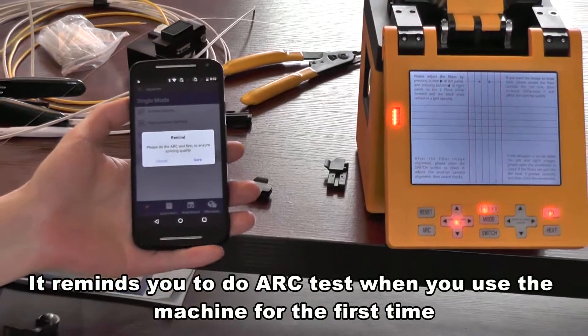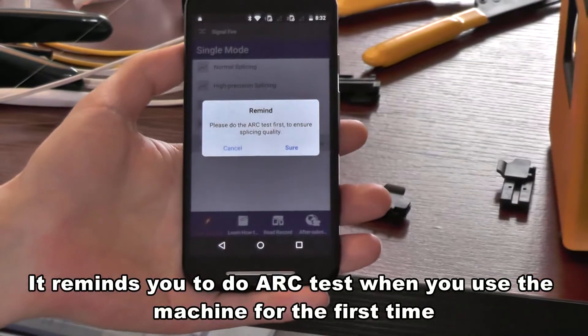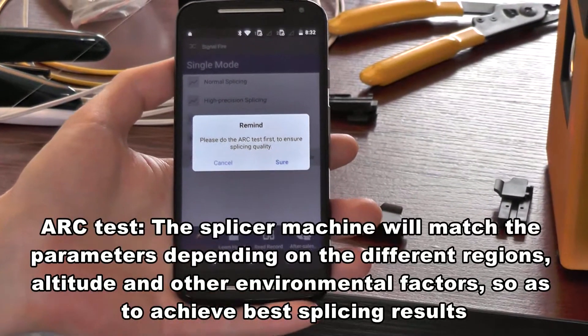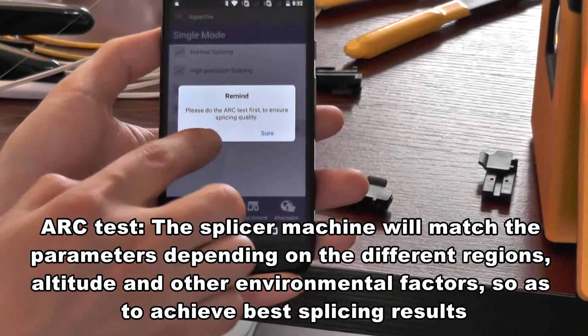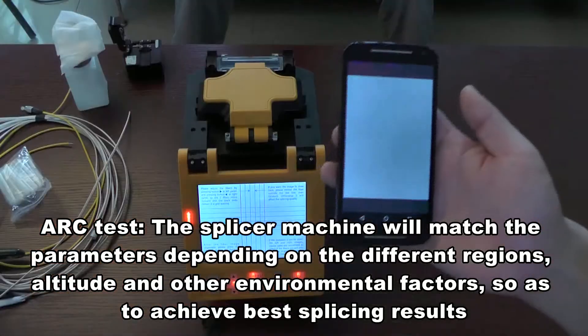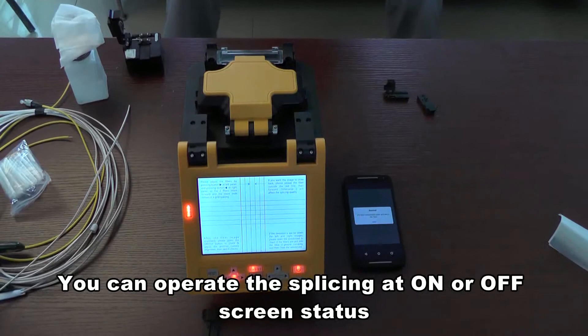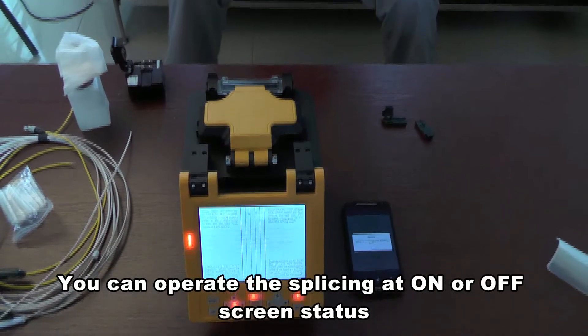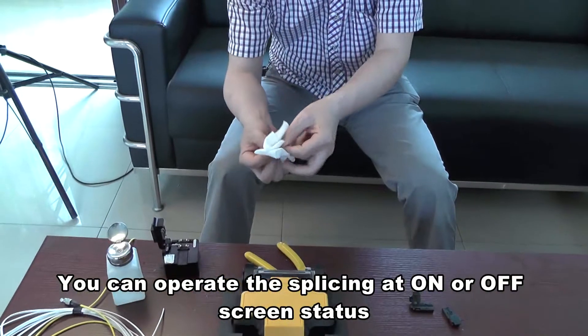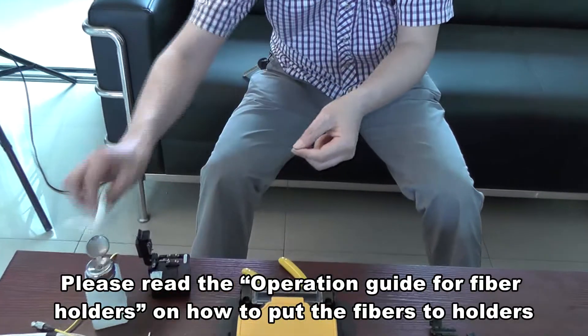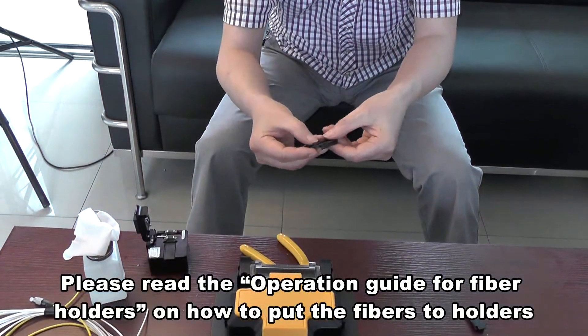It reminds you to do arc test when you use the machine for the first time. The splicer machine will match the parameters depending on the different regions, altitude, and other environmental factors, so as to achieve best splicing results. You can operate the splicing at on or off screen status. Please read the operation guide for fiber holders on how to put the fibers to holders.